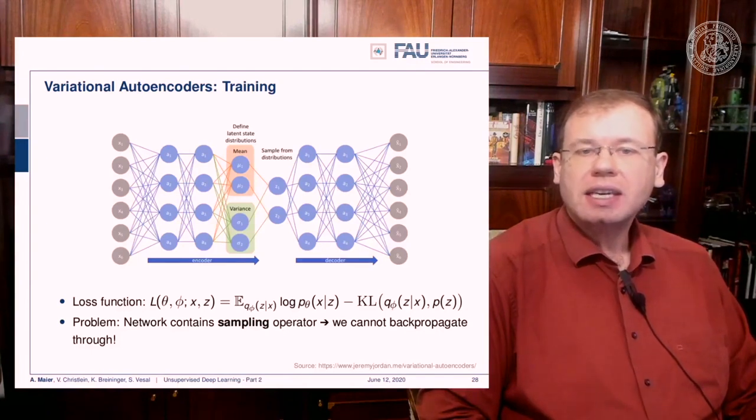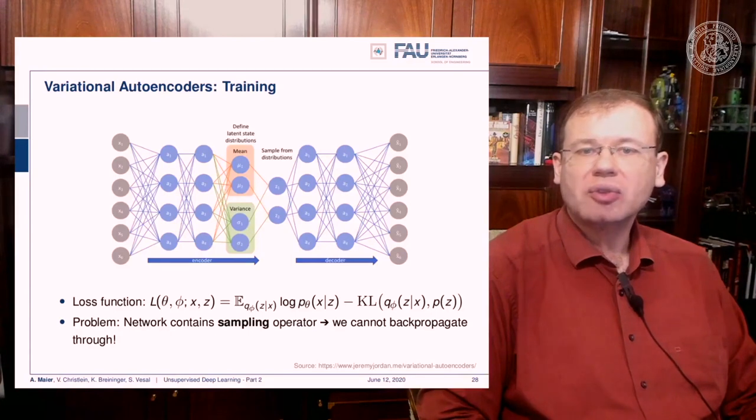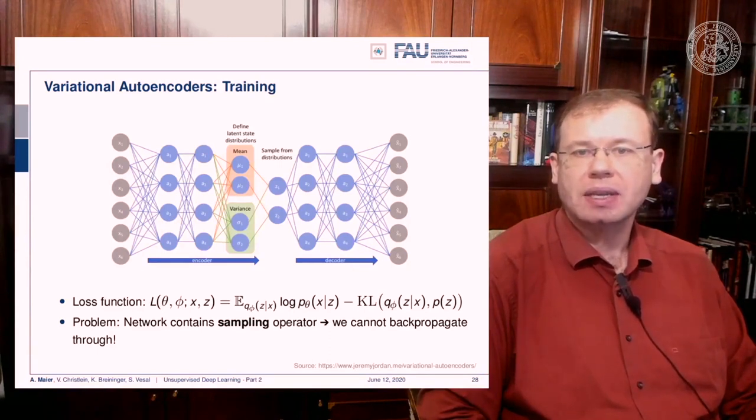Now the key problem is that in order to go to the next layer, we have to sample from those distributions in order to get the actual observations and perform the decoding on them. So how can this potentially be done?